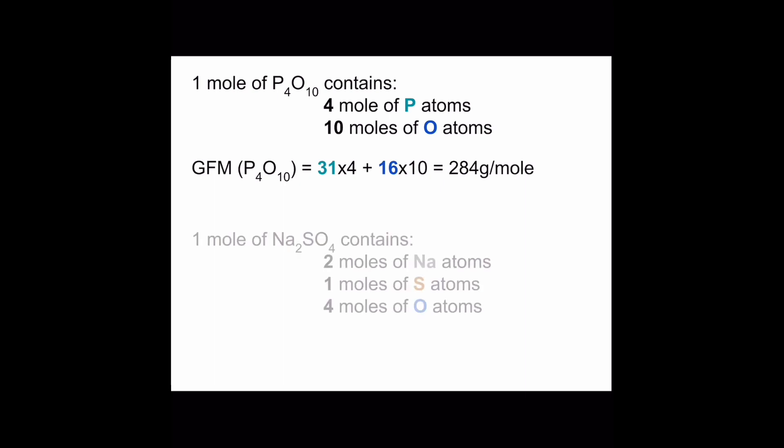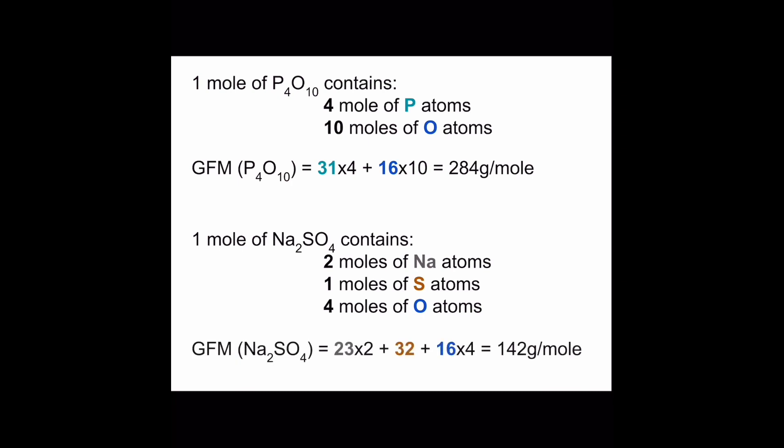Now sodium sulfate. From its formula, we can see that it is made of 2 moles of sodium, 1 mole of sulfur, and 4 moles of oxygen. We look up the molar masses of these elements on the periodic table and add them up. Don't forget to multiply the molar mass of sodium by 2 and the molar mass of oxygen by 4.